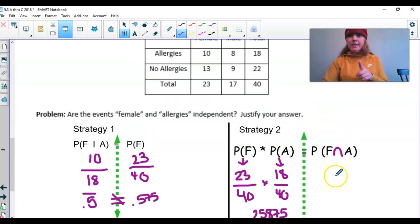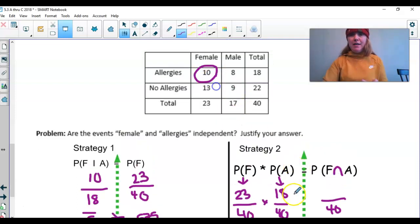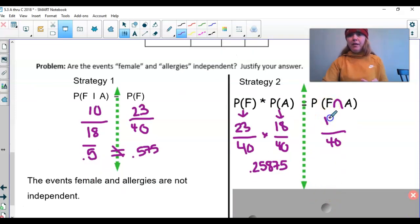Now, I want to see, is this equal to, again, there's no conditions with this. Out of the 40 people, how many are female and have allergies? And that's right there. There's 10 of them. Well, 10 out of 40, we know that. That's 0.25.